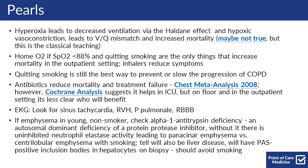For EKGs, things you can see in COPD exacerbations include sinus tachycardia, right ventricular hypertrophy, P pulmonale, and a right bundle branch block. If you see emphysema in a young non-smoker, you should be thinking about alpha-1 antitrypsin deficiency, which is an autosomal dominant deficiency of a protein protease inhibitor. Without it, there's uninhibited neutrophil elastase activity leading to panacinar emphysema, versus the centrilobular emphysema you see with smoking. Another tell will be that the patient has underlying liver disease.